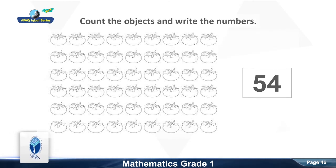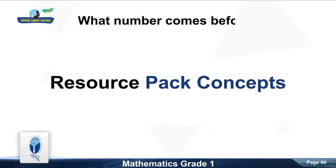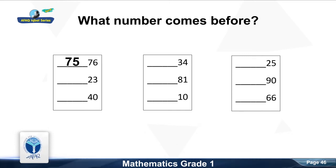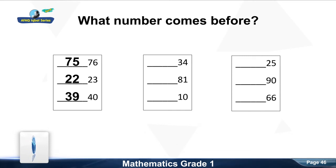Now we move to the next resource pack concept: what number comes before? What number comes before seventy-six? Good, seventy-five. What number comes before twenty-three? Good, twenty-two. What number comes before forty? Good, thirty-nine. What number comes before thirty-four? Good, thirty-three.